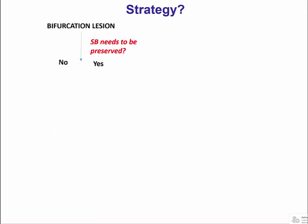A general approach in every bifurcation is to begin by asking whether the side branch is big enough and needs to be preserved. In this particular case, the side branch is very large, supplying a large anterolateral territory. Therefore, it is clearly an important side branch to preserve.